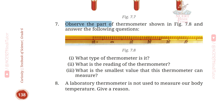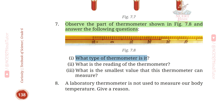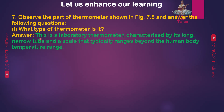Question 7: Observe the part of the thermometer shown in Figure 7.8. First, what type of thermometer is it? Answer: This is a laboratory thermometer, characterized by its long, narrow tube and a scale that typically ranges beyond the human body temperature range.